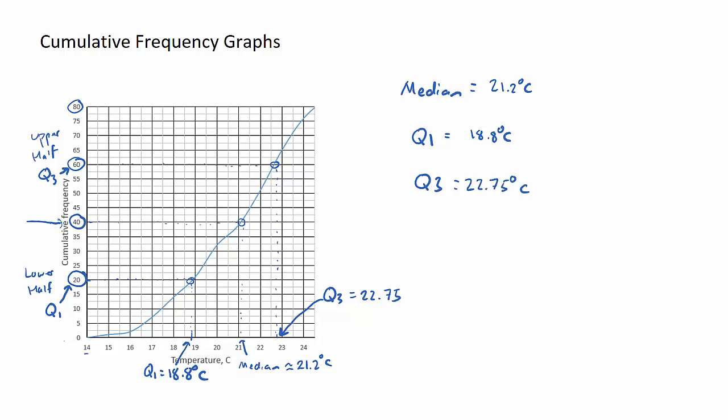So that's how we find the median and quartiles directly off our cumulative frequency graph. A very common follow-up question would be to estimate or calculate the interquartile range. As we talked about in key concept video one, that is simply the upper quartile subtract the lower quartile. So for this case, it would be 22.75 subtract 18.8.